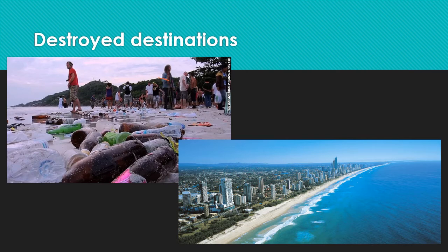Here are some examples of destroyed ecotourism destinations. This one over here clearly has a whole lot of rubbish left on the beach — we know what happens when rubbish gets left on beaches: it goes into the sea and damages the wildlife. And this is in Australia — the Gold Coast — so instead of really beautiful natural beaches, we've got high-rise buildings, which have destroyed the natural environment there.